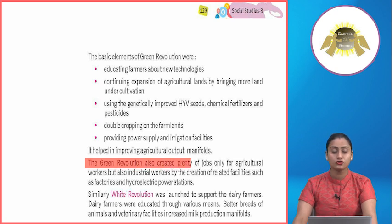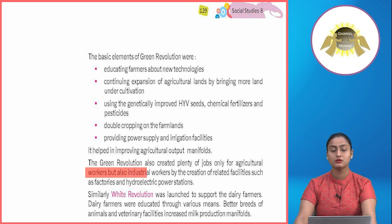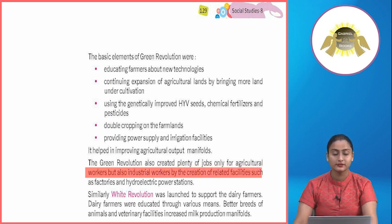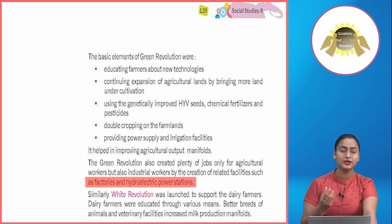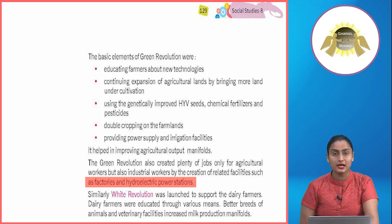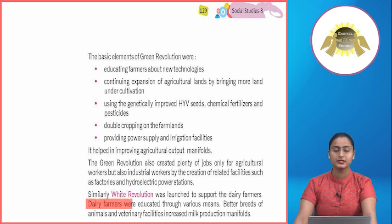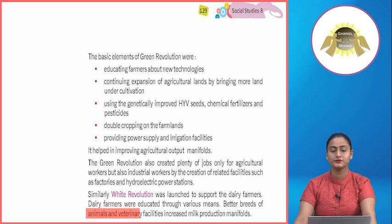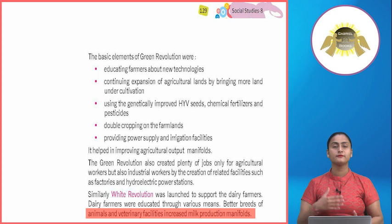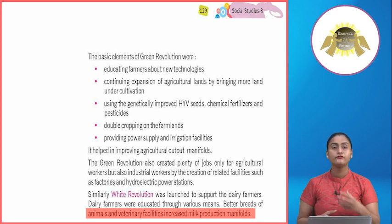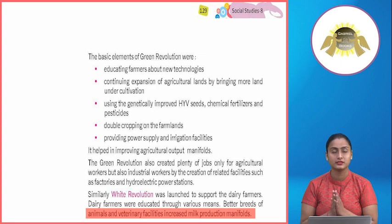The green revolution also created plenty of jobs not only for agricultural workers but also for industrial workers through the creation of related facilities such as factories and hydroelectric power stations. Similarly, the white revolution was launched to support dairy farmers. Dairy farmers were educated through various means, better breeds of animals and veterinary facilities were provided, which increased milk production many-fold.